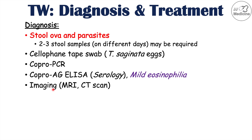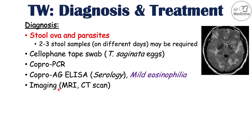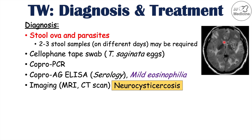Imaging can also be utilized in some cases — MRI and CT scan — particularly when there is suspicion of neurocysticercosis, which is the condition where there are cysticerci within the central nervous system. In this image you can see small cysts, which is indicative of a Taenia solium infection.